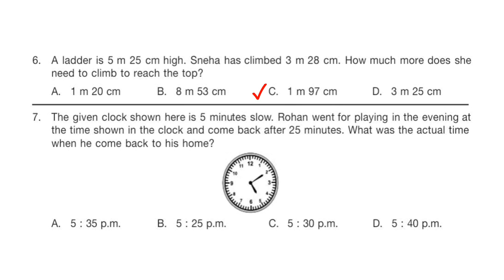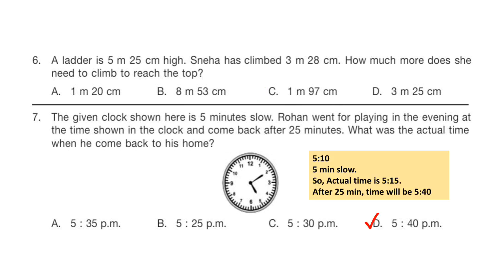Question 7: The given clock shown here is 5 minutes slow. Rohan went for playing in the evening at the time shown in the clock and came back after 25 minutes. What was the actual time when he came back home? The clock is 5 minutes slow, so the actual time is 5:15 because it is showing 5:10. After 25 minutes, the time will be 5:40. The correct answer is option D.